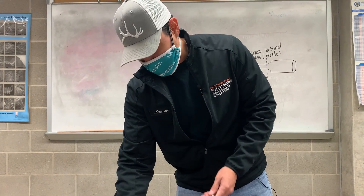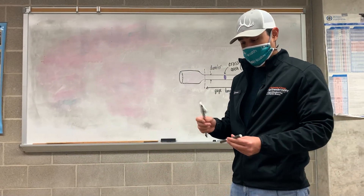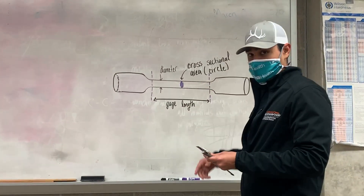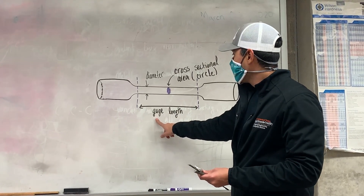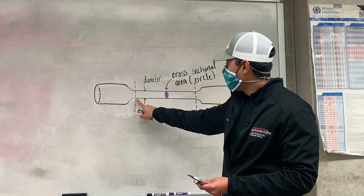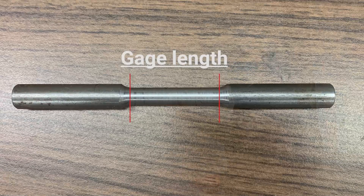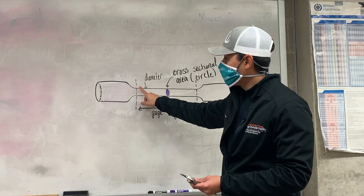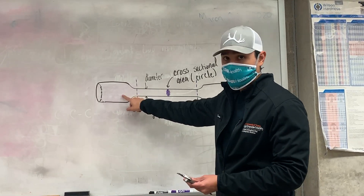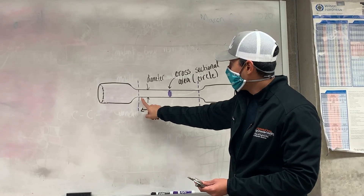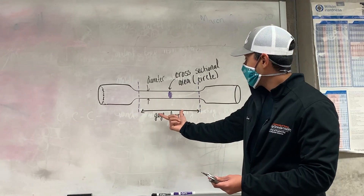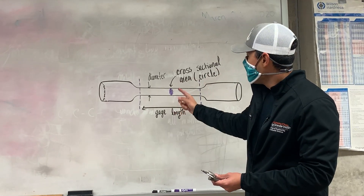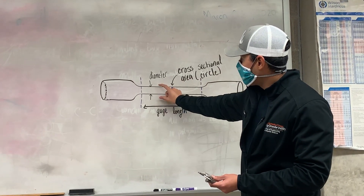The first two measurements you're going to obtain are with the calipers. Referring to this diagram, the first measurement is the gauge length of the specimen — from the two linear or parallel lengths, not including the radius portion where it transitions from the thinner portion to the raw portion. We want the gauge length from the start before the radius to the opposite end before the radius.